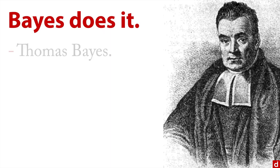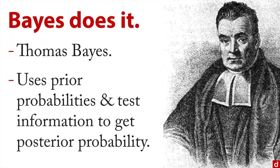On the other hand, there's a way of dealing with it — Bayes does it. This is our guy right here, the Reverend Thomas Bayes, an 18th century English minister and statistician. He developed a method of getting what are called posterior probabilities that uses prior probabilities and test information — things like base rates, how common is something overall — to get the posterior, or after-the-fact, probability.